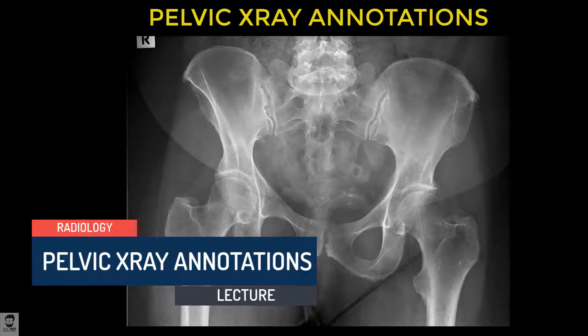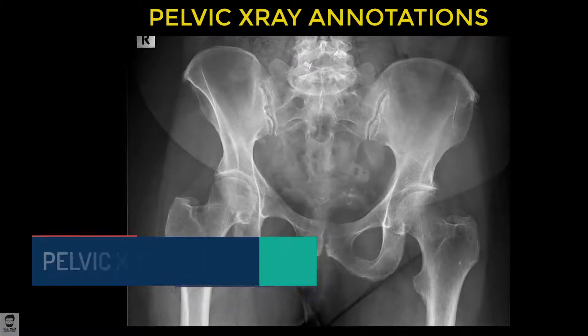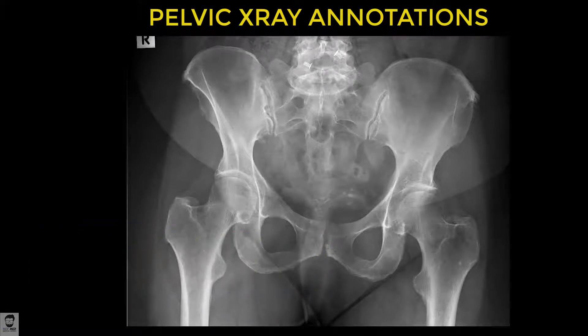Hello everyone, welcome to another lecture. Today we're going to start another x-ray series. This series will mainly contain identifying important structures and lines on x-rays. We're starting with an x-ray of the pelvis, and today we're going to look at what the important things are to see in this x-ray.